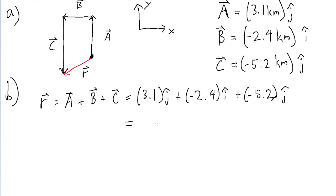Only the ones with the same component. So using basic arithmetic, we can only simplify this down to negative 2.4 kilometers i-hat plus, and then 3.1 minus 5.2 is negative 2.1, so plus negative 2.1 kilometers with the j-hat.